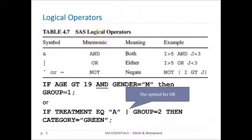In the same way, there are some logical operators I could use to make more difficult or more complex constructs. The mnemonics there you see and the symbols. In my first example, if age greater than or equal to 19 and gender equal M, then group equal 1 uses the mnemonic. And in the second one, if treatment equal to A or group equal to 2, then category equal green uses the symbol for or. You can use either one of them.